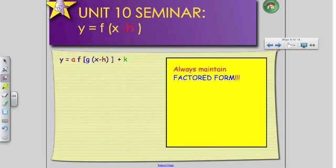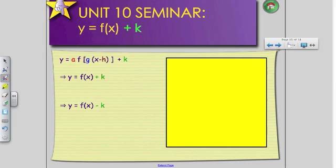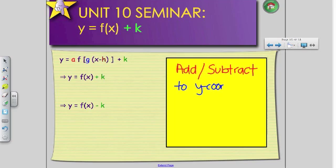Very last transformation will be our vertical shift transformation. This is a lot easier, because if it's a positive number, we're going to add. And if it's a negative number, we're going to subtract. But vertical shift, because we're talking about up and down, we're adding and subtracting to our y-coordinates.